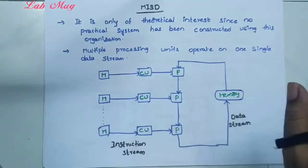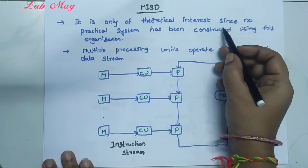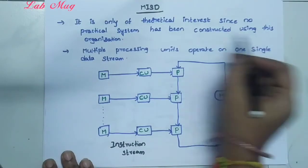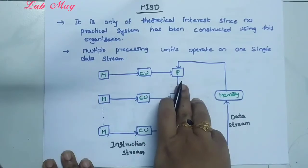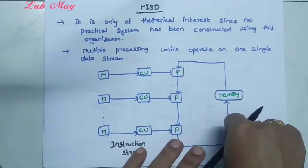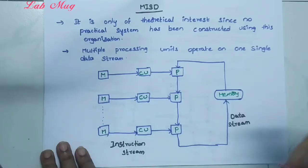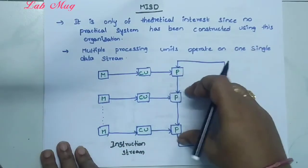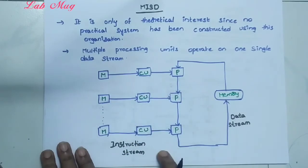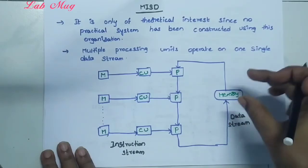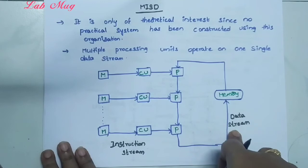Multiple Instruction Single Data — instructions are multiple but the data stream is only one. It is only of theoretical interest since no practical system has been constructed using this organization. Multiple processing units operate on one single data stream. Each processor has a separate control unit and separate memory unit. Multiple instructions, but only one data stream is accessed — these are the instruction streams, and this is only one data stream. That is Multiple Instruction Single Data.